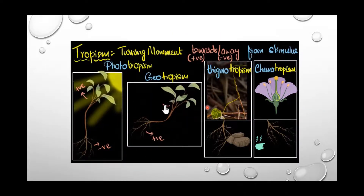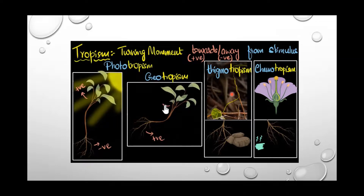All four tropisms are shown here in one picture for reference: phototropism, geotropism (positive and negative). If the movement is towards the stimulus it is positive; if away from the stimulus it is negative. The stimuli shown here are light, gravity, touch, and chemical.